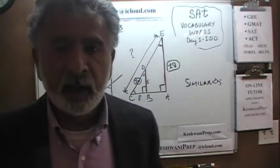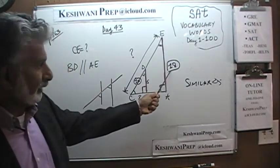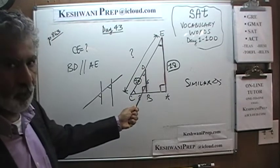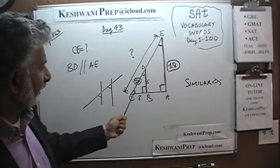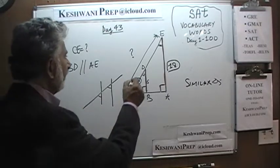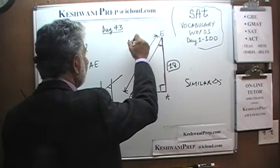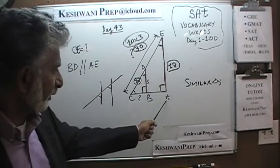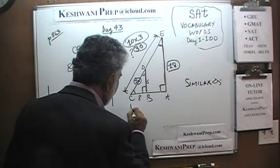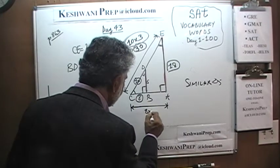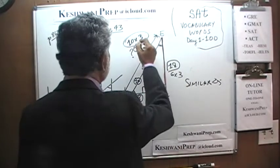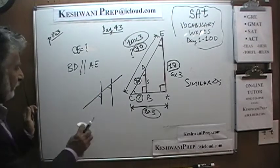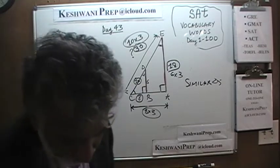What we conclude is that the three angles in the small triangle are exactly the same as the three angles in the large triangle, which makes these two triangles similar triangles. Similar triangles have proportional sides. If this side is 6 and this is 18, the bigger triangle is 3 times this triangle. We already know that CD is 10, so CE would be 10 times 3, which is 30. And AC would be 8 times 3 — the sides are 18, 24, and 30.